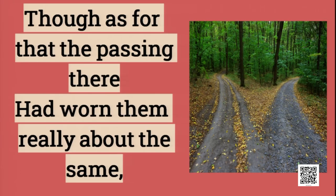Though as for that the passing there had worn them really about the same. The poet initially said that the road he chose was very grassy and not many people had walked on it. But now the poet is saying it is the same as the other path. After walking on it for some distance, he realized both paths had been worn out the same way — both were similar and equally walked upon. The poet initially thought he was taking a less used path, but later contradicts himself and says both paths appear similar to him.